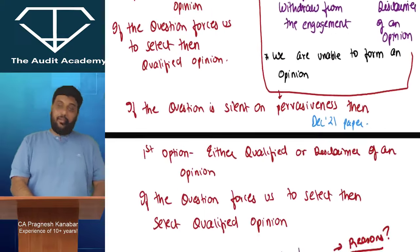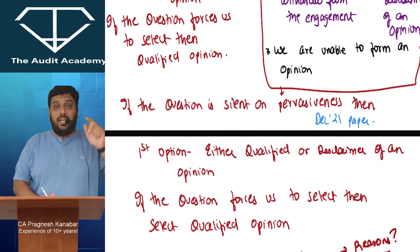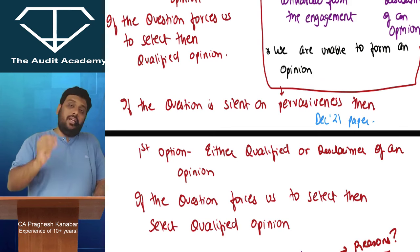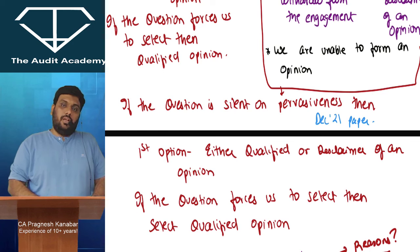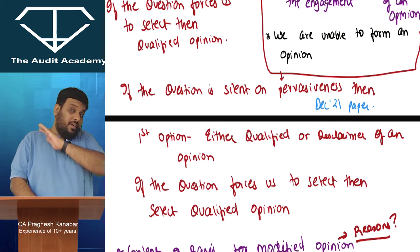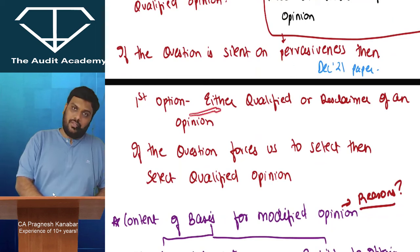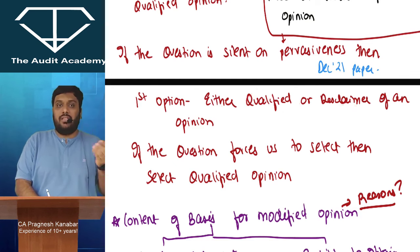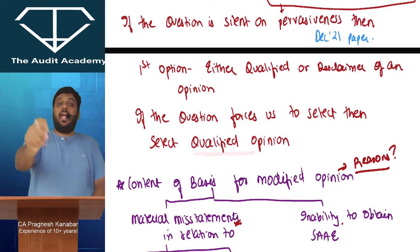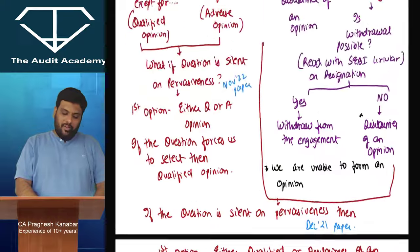In the December 2021 paper, there was a case study where a company gave a loan and could not produce evidence. Nature of company, total assets, turnover — none of these were given, so we understood it was material but couldn't determine if it was pervasive. If the question is silent on pervasiveness and evidence is not available, the first option is either qualified or disclaimer. If the question forces you to choose, settle with qualified opinion — as confirmed in the December 2021 suggested answers.